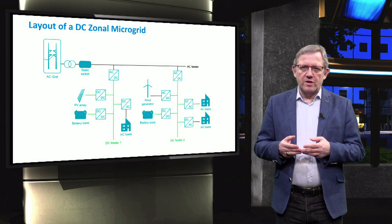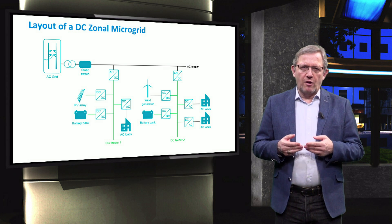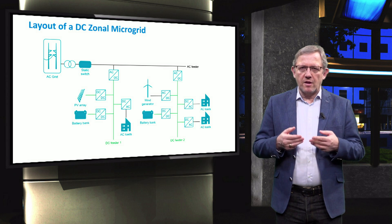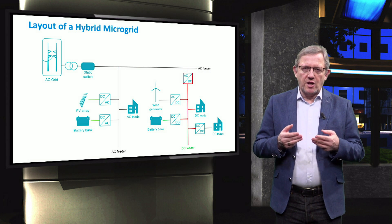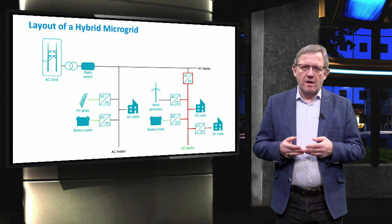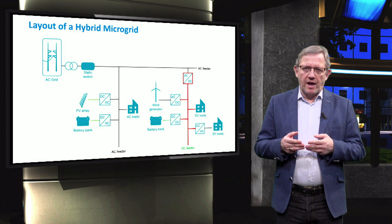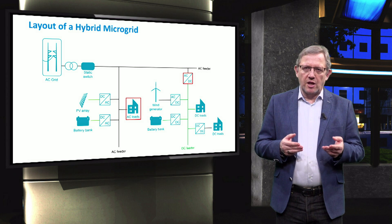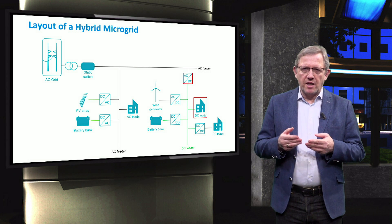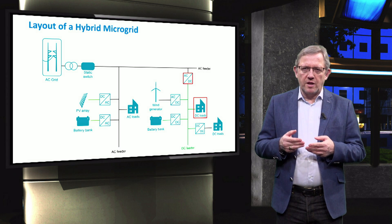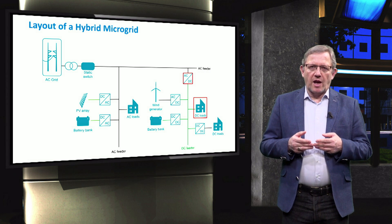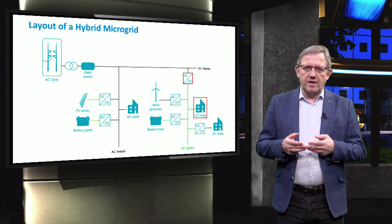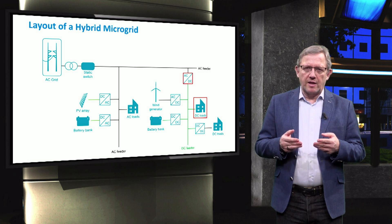The main drawback of the DC zonal architecture is increased complexity due to the interconnection between feeders. The AC-to-DC hybrid microgrid architecture consists of an AC microgrid with a DC subgrid tied together by a bidirectional AC-to-DC converter. Distributed generators can be connected to either the AC or the DC feeders. AC loads are connected to the AC feeder, whereas DC loads are connected to the DC feeder using a power converter to adapt the voltage level if necessary. The DC subgrid can act as a generator or a load of the AC microgrid depending on the power balance at the DC feeder.